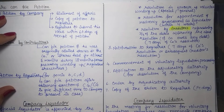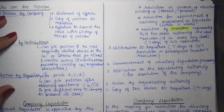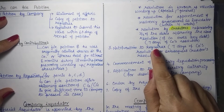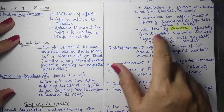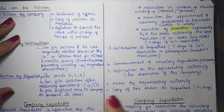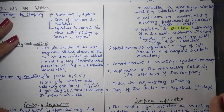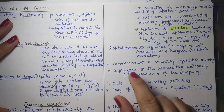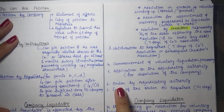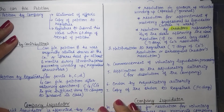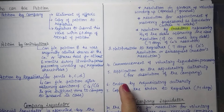It is important to note that the term 'creditor' in liquidation proceedings does not imply just trade creditors — it includes all types of external liability holders. Once these resolutions have been passed, you apply for voluntary insolvency under the code, and you need to notify the registrar within seven days of the company's resolution and the creditors' resolution. Once the liquidator has realized all assets and paid off all liabilities, an application is made to the adjudicating authority for dissolution, the order is passed, and a copy is sent to the registrar within 14 days.